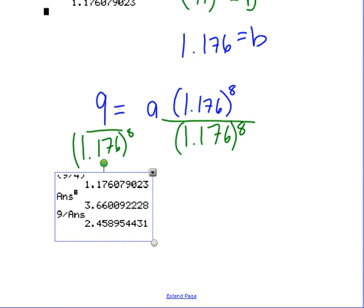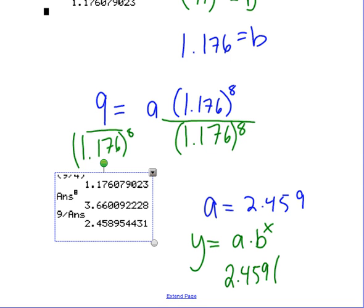So therefore, a is 2.459. And we go back to our original equation, which was y equals a times b to the x. We stick a in there, we stick b in there. And that is the exponential equation that goes through those two points.